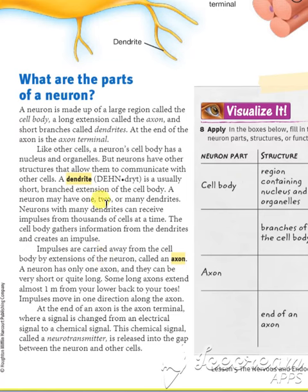You know what an impulse is — like the time when you know it's hot and you remove your hand from somewhere. Impulses are carried by those electrical messages. A neuron may have one, two, or many dendrites. Neurons with many dendrites can receive impulses from thousands of cells at a time.